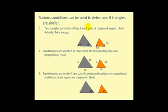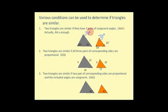There are various conditions that can be used to determine if triangles are similar. Number one, two triangles are similar if they have three pairs of congruent angles — sometimes called AAA. But actually, angle-angle (AA) is enough. For example, if two pairs of corresponding angles are congruent, and since the angles must sum to 180 degrees, we can conclude the third pair also equals 70 degrees, guaranteeing the two triangles are similar.